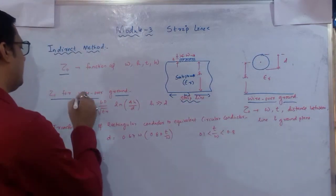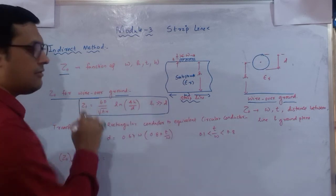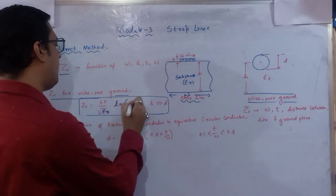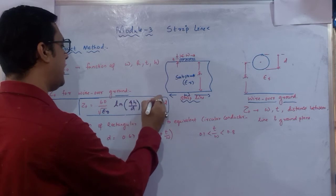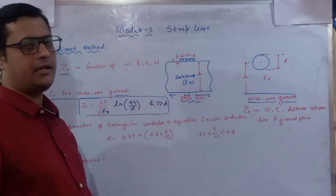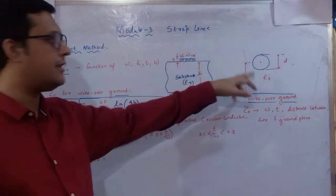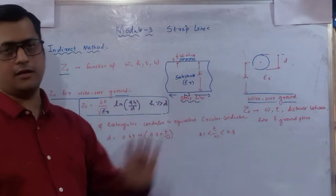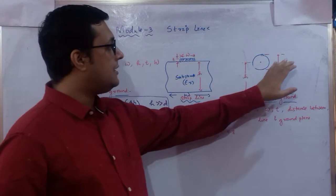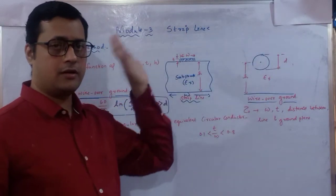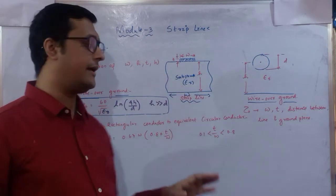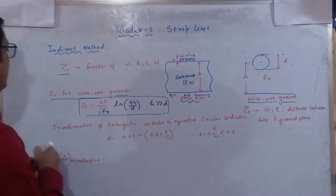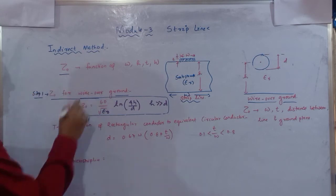The characteristic impedance for the wire-over-ground is: Z₀ = 60/√(ε_r) × ln(4h/d), where h >> d — the height above the ground is much greater than the diameter of the conductor. This is Step 1: identify the characteristic impedance for the cylindrical system. Step 2 will convert these characteristics to the microstrip line by changing only the dimensions.